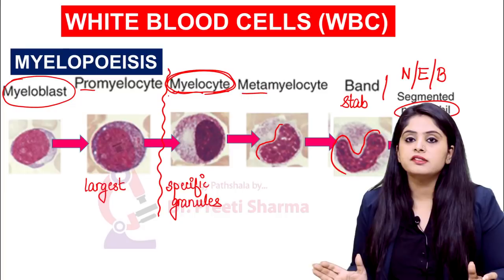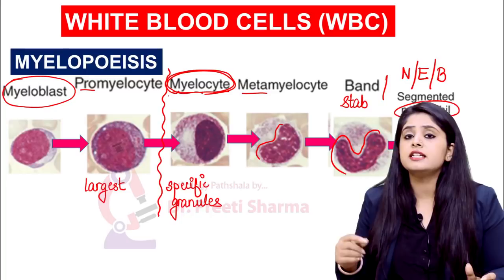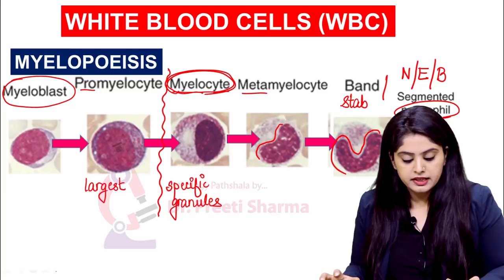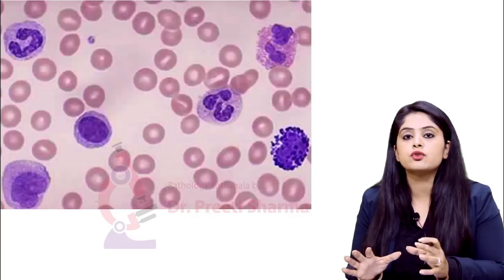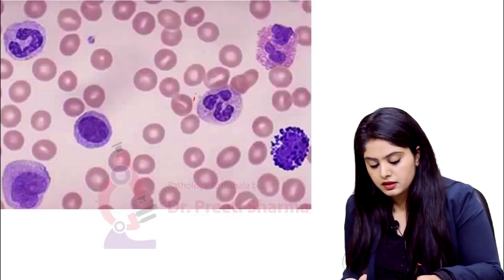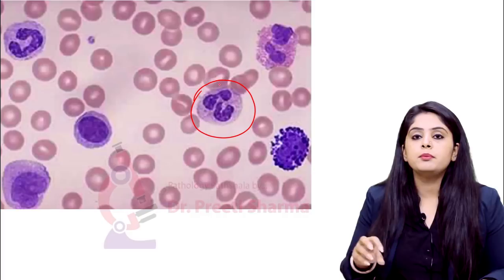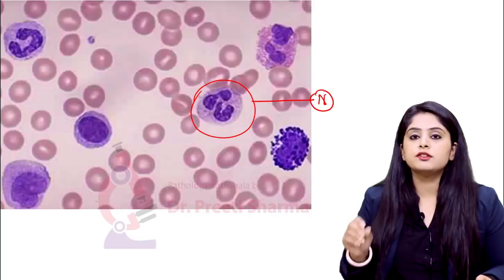Having dealt with myelopoiesis, let us go back and revise how to identify the various WBCs. This image is very important because all five WBCs are seen in one image and you should be able to label them properly. The first one — any cell which has multiple nuclear lobes is going to be a neutrophil. So multiple nuclear lobes equals neutrophil.